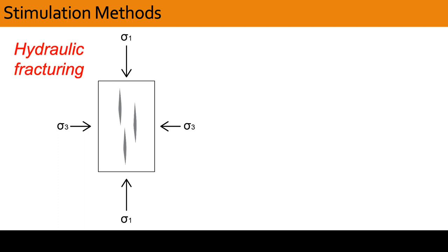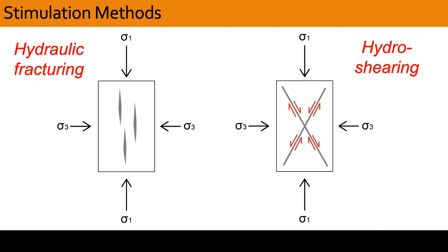Instead, in EGS stimulations, it turned out that pre-existing fractures were opening through shear displacement in the direction of the red arrows illustrated on the right. This process is called hydro-shearing. Furthermore, the translation of bumps and dips across the rough fracture surface created openings that enhanced permeability. This is known as self-propping. Thus, reactivated structures were the ones that controlled fluid movement in tight crystalline rock.